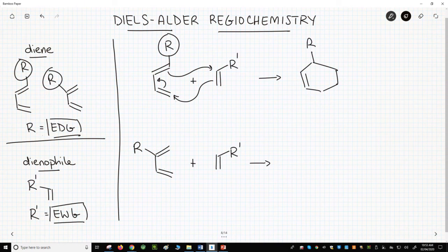The mechanism shown would give this product. And there's another possible isomer that could form. That would be that compound.